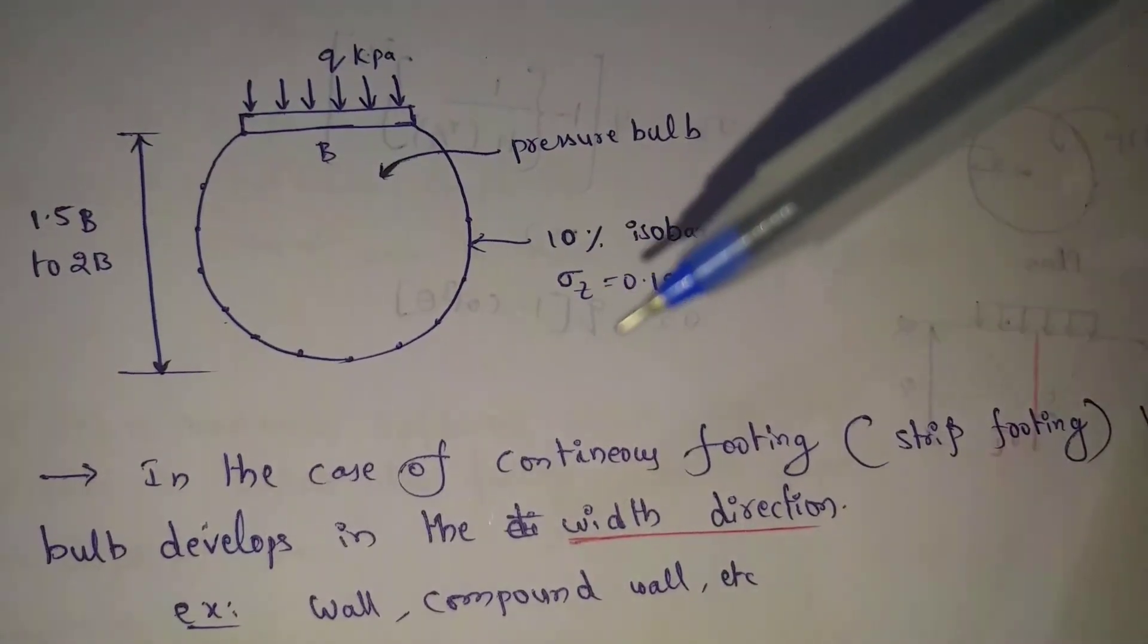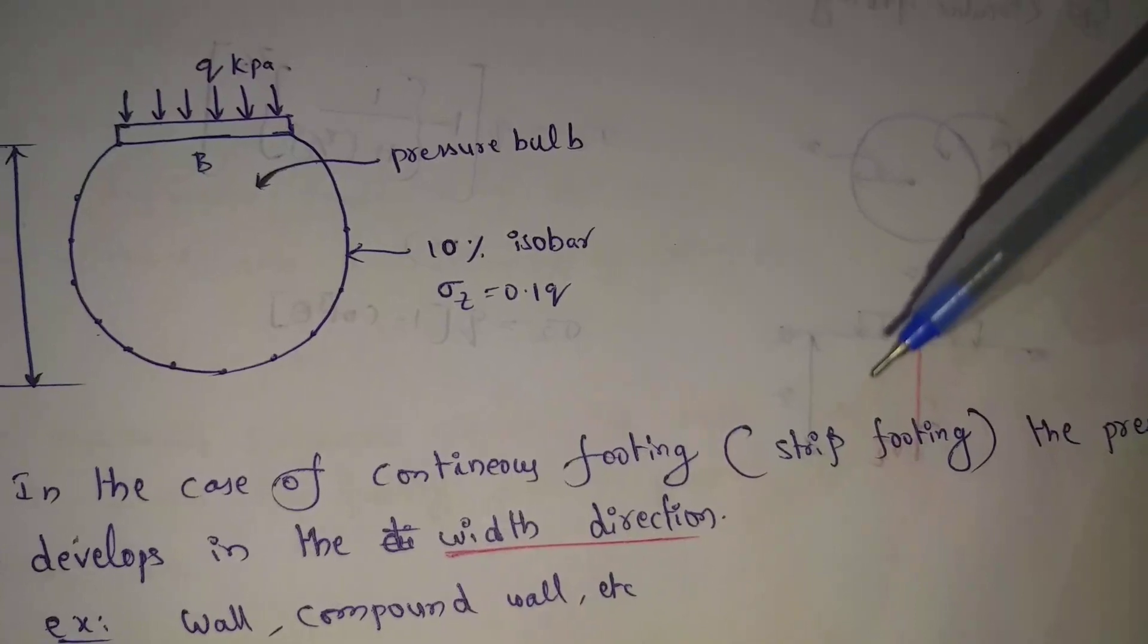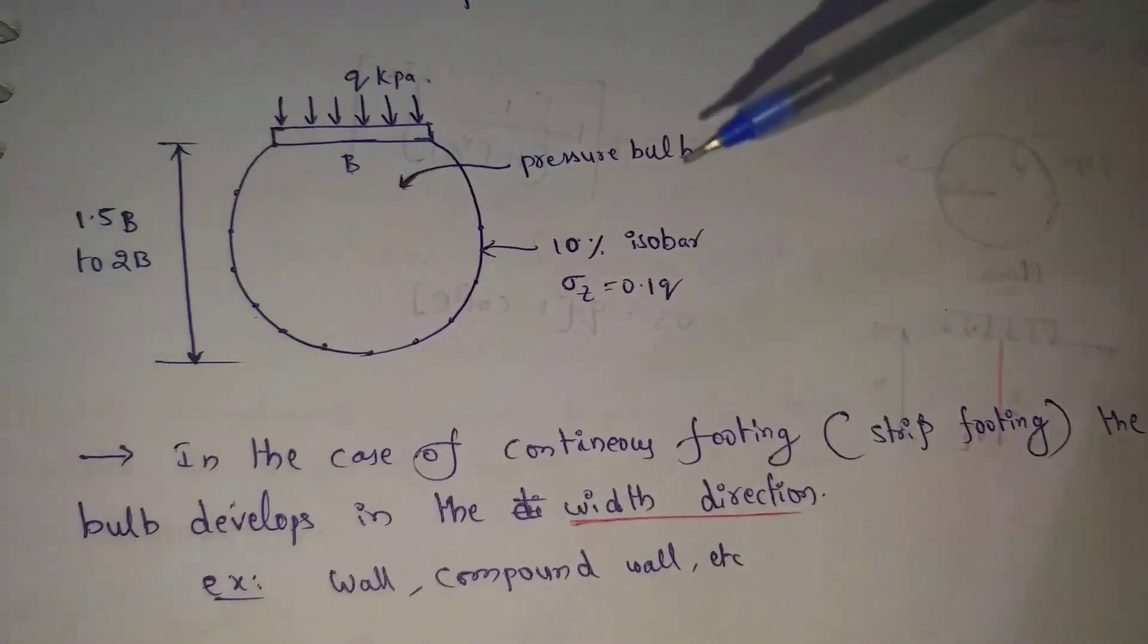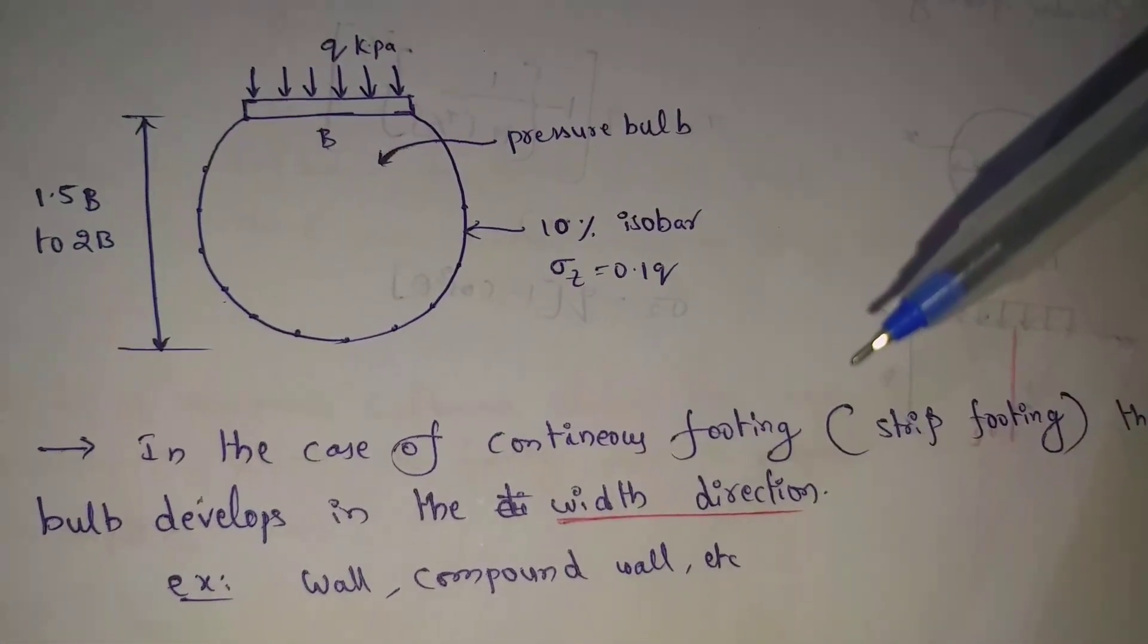Next one, in the case of continuous footing, continuous footing means stiff footing, so the pressure ball develops in the width direction.